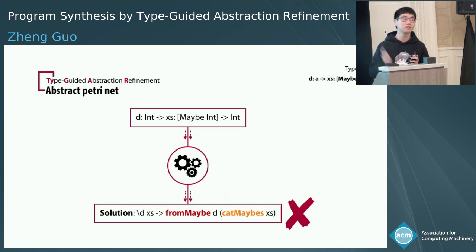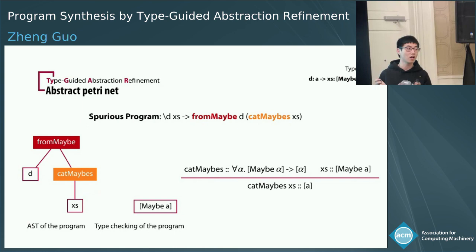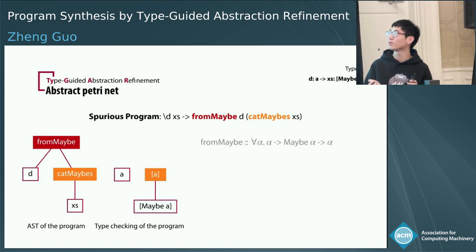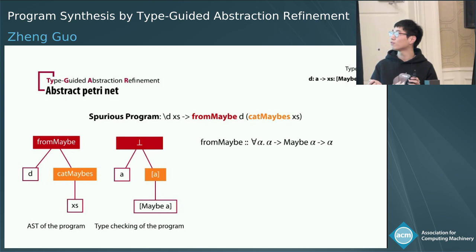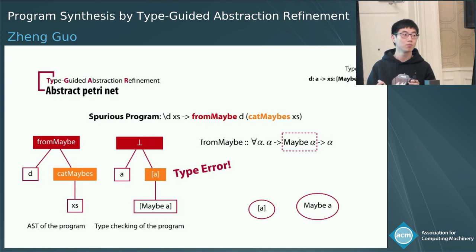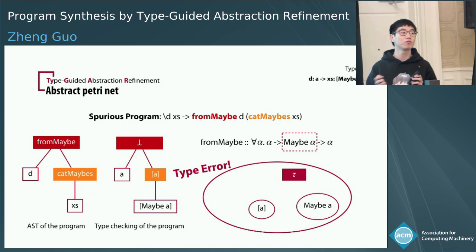Let me do the type checking. We know xs has type list maybe A, and catMaybes is a polymorphic function — after type checking, its output has type list of A. We also know the default value has type A. Now we need to apply these two arguments to fromMaybe. We try to unify them with the arguments of fromMaybe, and we soon find that we cannot, because list of A does not unify with maybe alpha. We get a type error. The reason is that we expected a maybe A there, but we gave it a list of A. In our abstraction, list of A and maybe A were collapsed into one single abstract type, which is why we get this spurious program. Our next step is to refine our abstraction so that we can distinguish these two types.